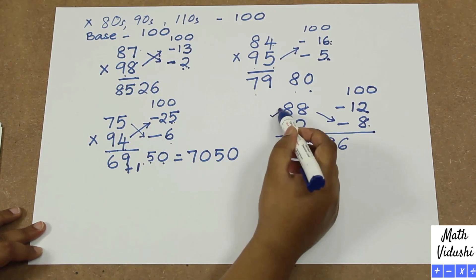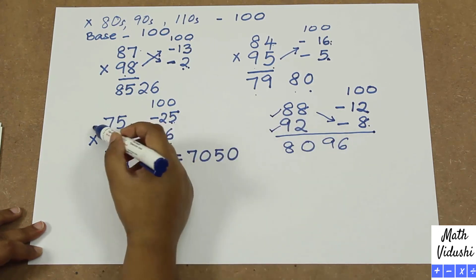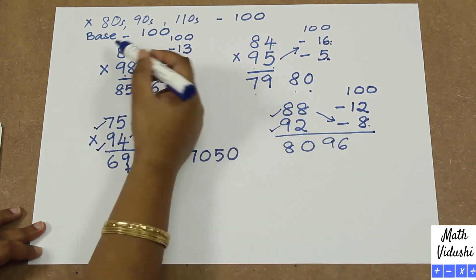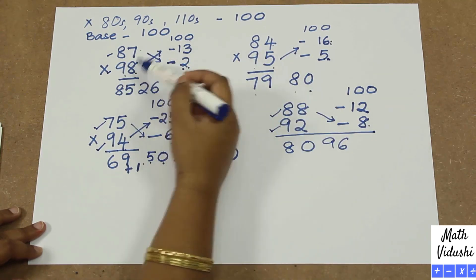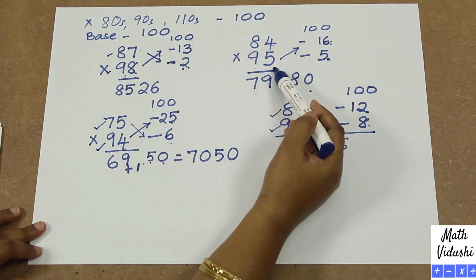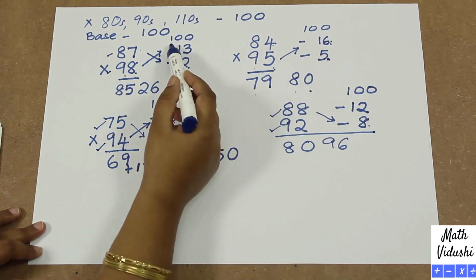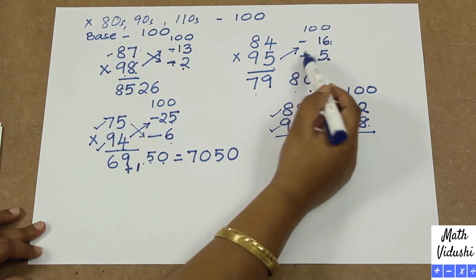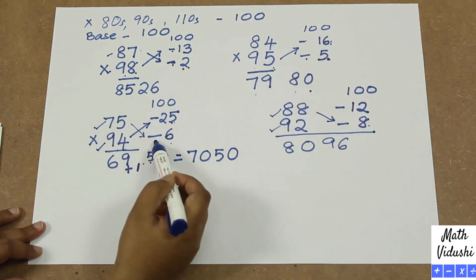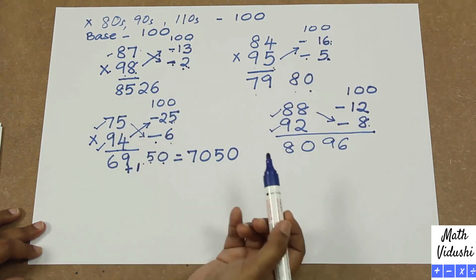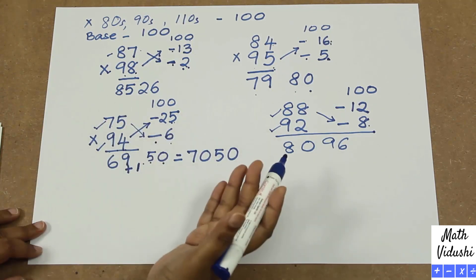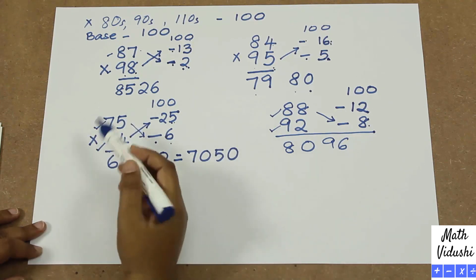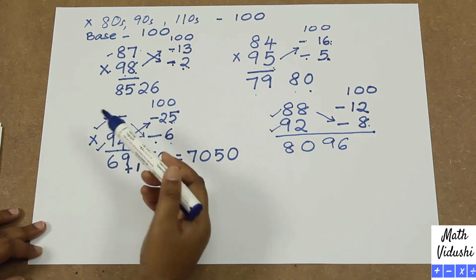In all these cases we have discussed the numbers which are near 100, but both the numbers are less than 100. 87 and 98 are less than 100; 84 and 95 are less than 100. So in both the cases you got minus, in both the cases you got minus here, both the cases you got minus here.